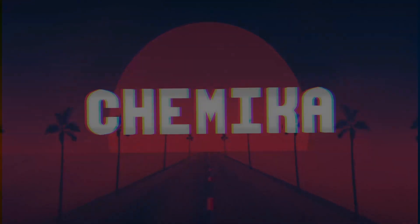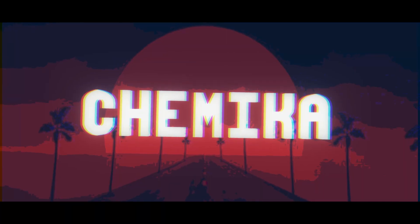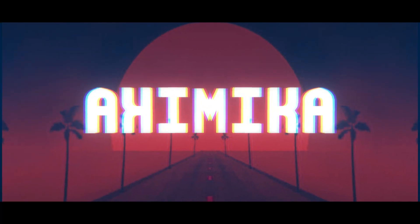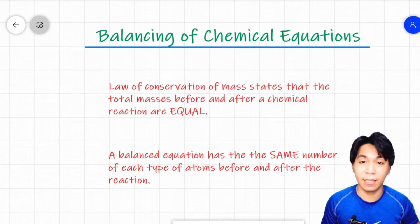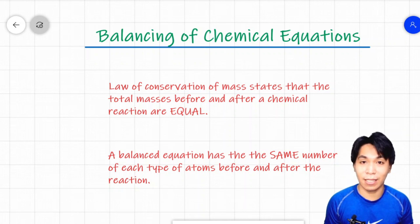In this video, let's talk about how to balance a chemical equation. According to the law of conservation of mass, the masses before and after a chemical reaction must be equal. That means the total number of atoms before and after a chemical reaction must be equal. Let's take a look at some examples.